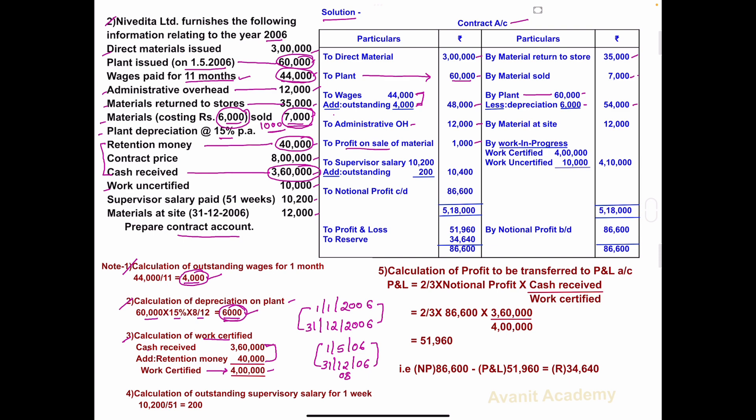Now we have both work certified and work uncertified. In the solution, under work in progress on the credit side: work certified 4,00,000; work uncertified 10,000. Total: 4,00,000 plus 10,000 equals 4,10,000.